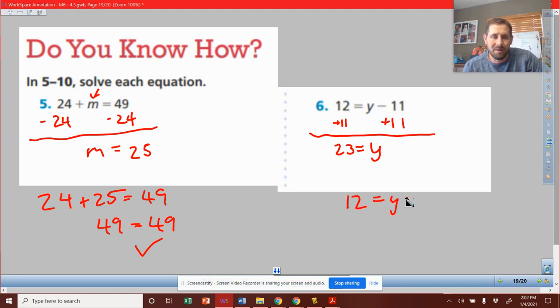12 equals y minus 11, so I'm going to write 12 equals, I think y is 23, minus 11. My 12 stays the same, 23 minus 11 is 12, so I've confirmed that this is the right answer.